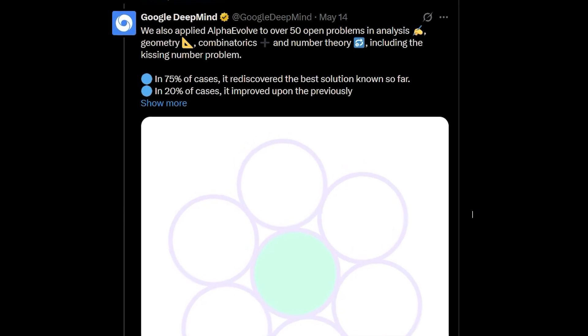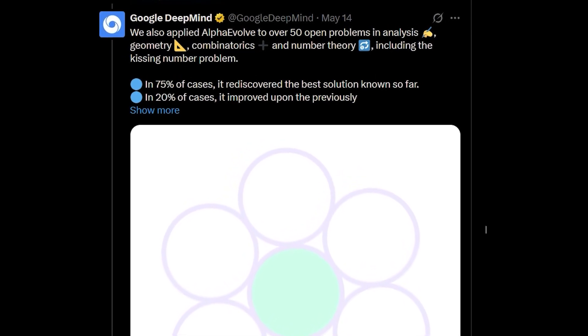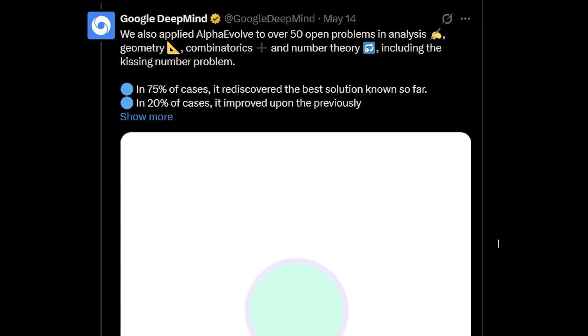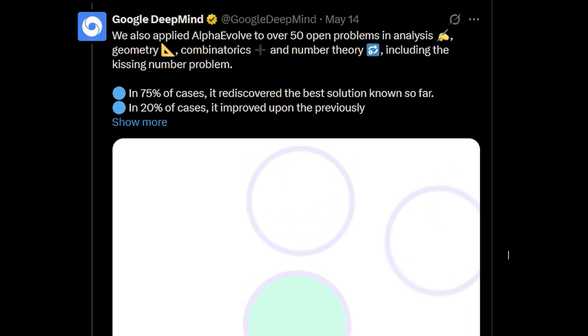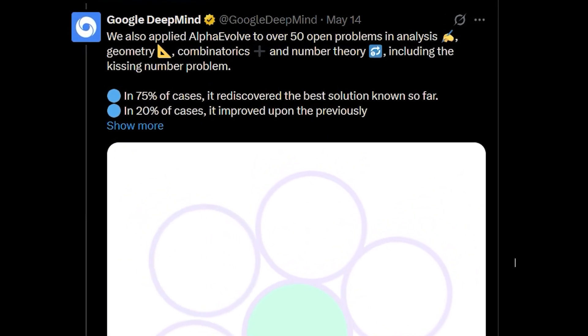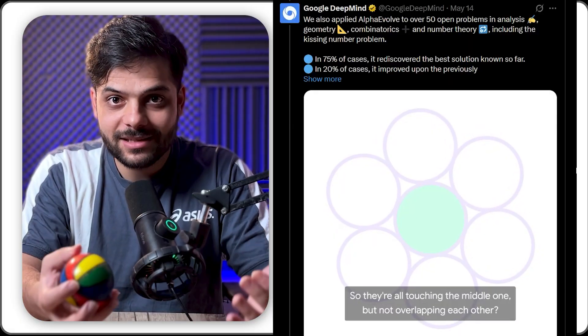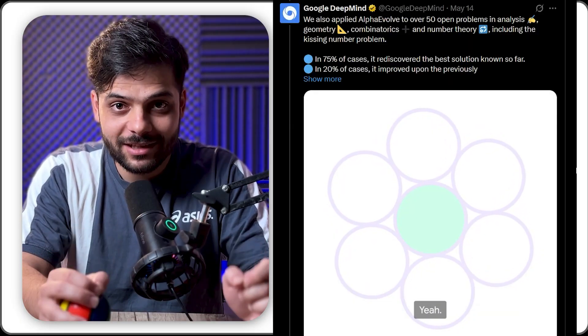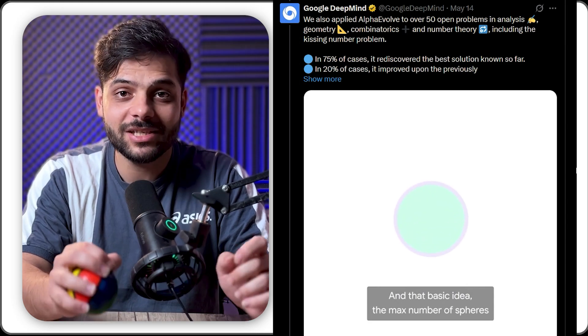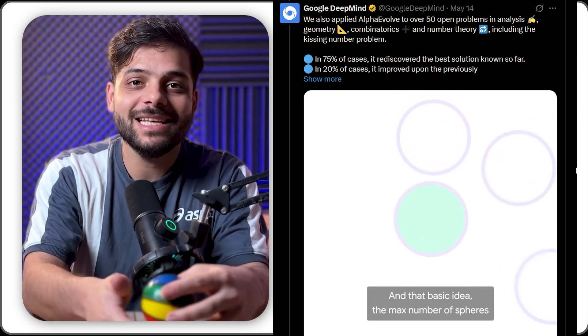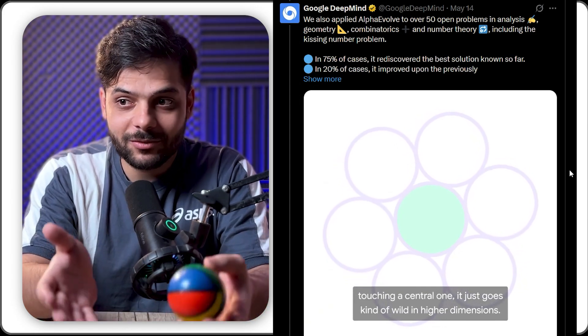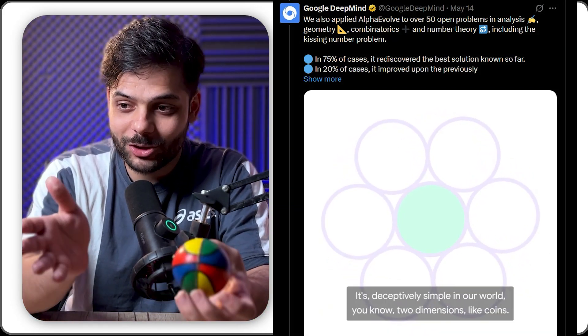AlphaEvolve at the end was applied to 50 open scientific problems. And in 75% of the cases, it rediscovered the best current solution without knowing it in advance. But it also improved the currently best known solution in 20% of them. 10 new discoveries in one paper. The fun part is that the paper is not even about the discoveries. It is about the AI that was able to discover them to show its capabilities.